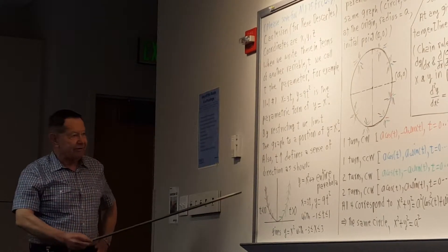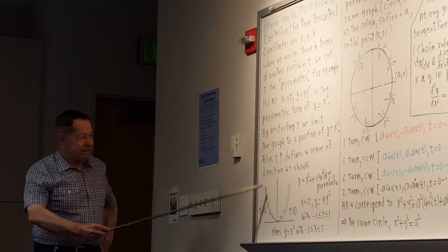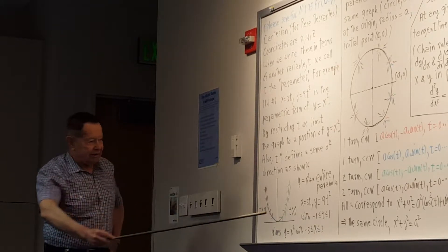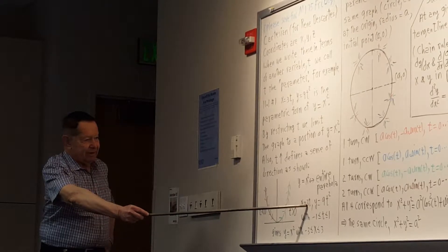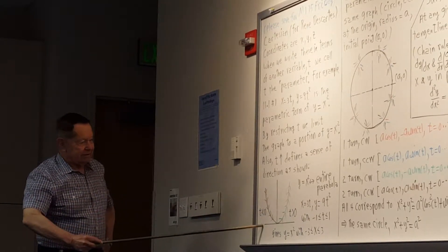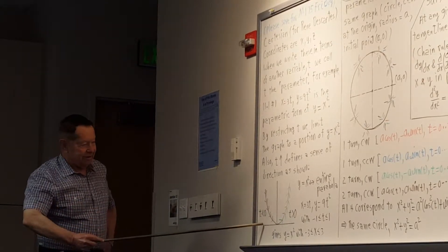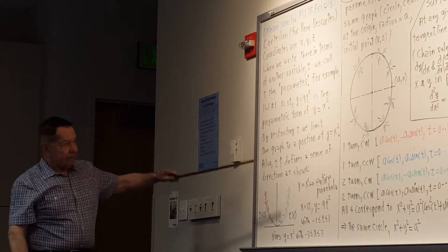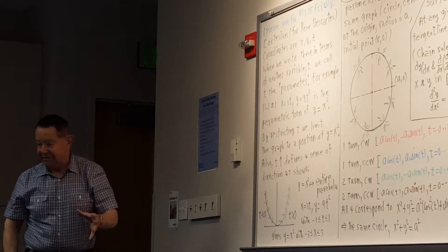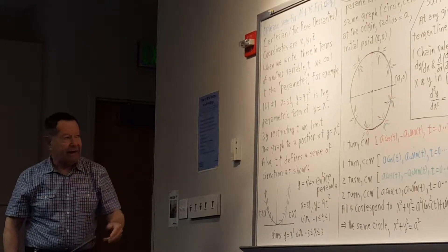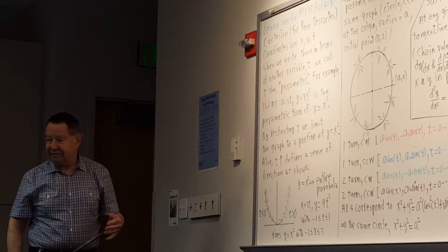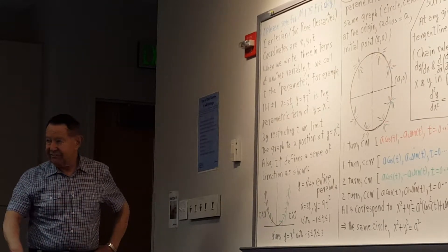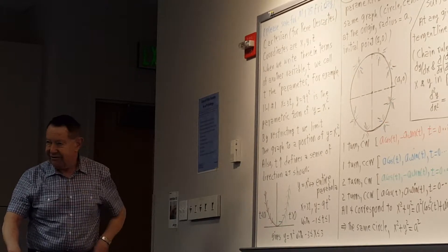For example, if you restricted T between minus 1 and 1, then X would be between minus 3 and 3, and you'd have that portion of the parabola from minus 3 to 3. Also, if you're writing X in terms of T and Y in terms of T, you have a sense of direction — a sense of motion along the curve.